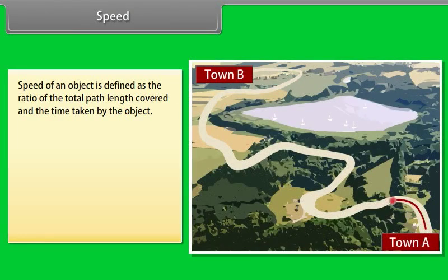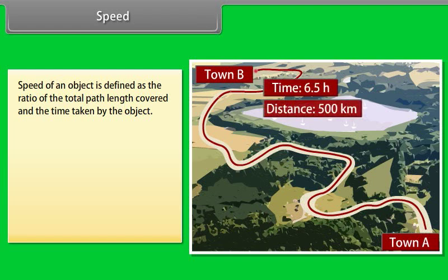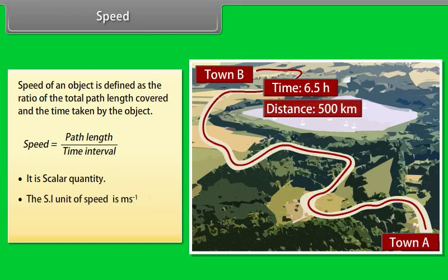Speed: The speed of an object is defined as the ratio of the total path length covered to the time taken. Therefore, speed = path length / time interval. It is a scalar quantity. The SI unit is m·s⁻¹. The dimensional formula is M⁰L¹T⁻¹.